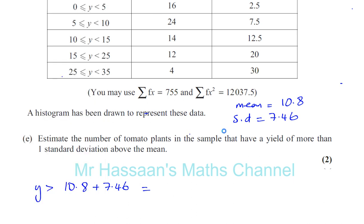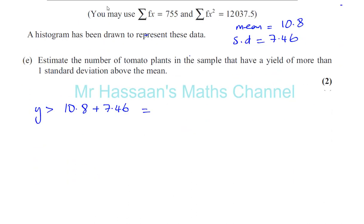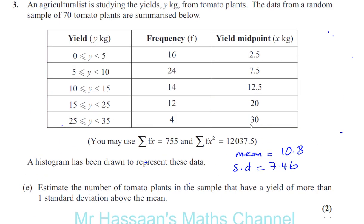We're trying to find the number of tomato plants where the yield is greater than 18.26. That's what we're trying to find - the yield has to be more than 18.26 kilograms.